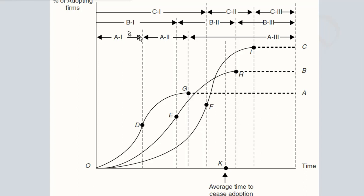This is a simple diagram in which we have the percentage of adopting firms on y-axis, and this is the average time of adoption when the cease happens. This is at a certain point, and on the whole, the x-axis has the time variable. So this is the beginning of our analysis.